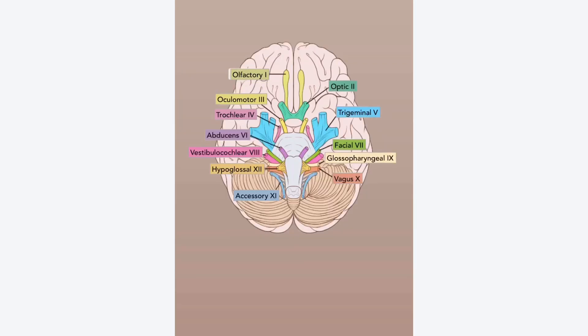Cranial nerve one: olfactory, nose, smell. Two, three, four, six: optic, oculomotor, trochlear, abducens. So remember, eye movement, eye sensation.